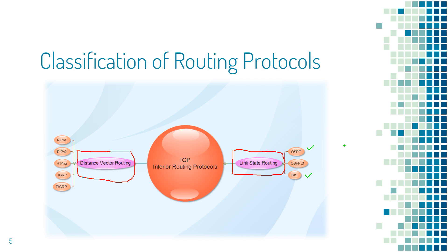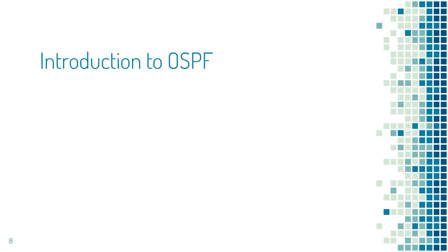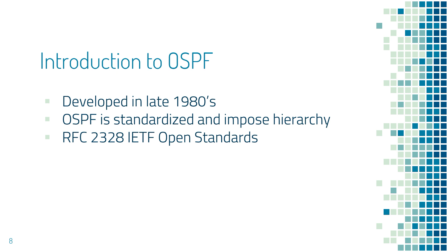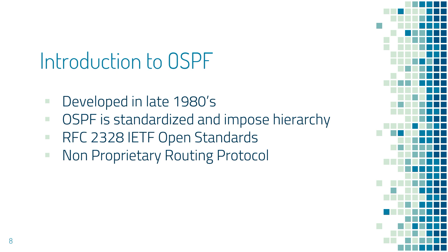OSPF stands for Open Shortest Path First. It is the most commonly used routing protocol for enterprise, service provider, and data center networks. OSPF is an old protocol developed in the late 1980s. It's a link state based routing protocol. It imposes hierarchy, is standards-based, based on RFC 2328, and is an IETF open standard. This protocol can interoperate between multi-vendor equipment like Cisco and non-Cisco devices — for example, Cisco to Juniper or Cisco to Alcatel-Lucent routers. It has an independent transport protocol number 89.